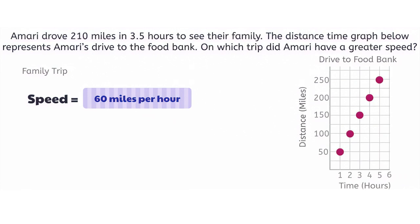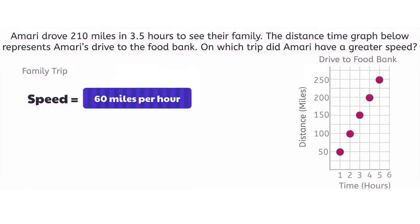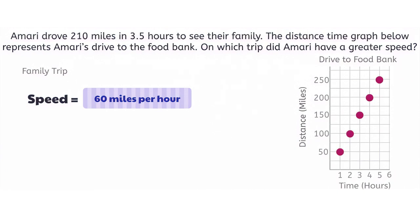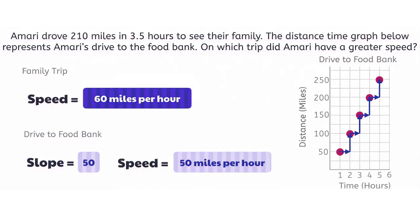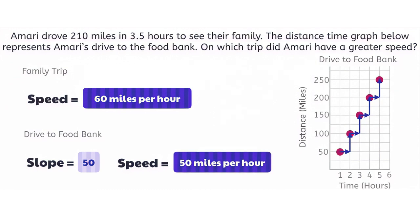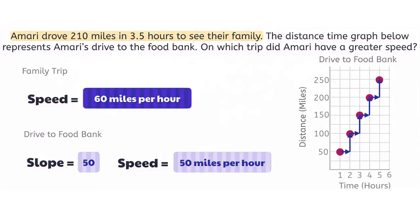Since we know Amari drove at an average speed of 60 miles per hour to see their family, we can determine how far they went after one hour when going to the food bank by looking at the graph. We can see that Amari drove 50 miles in one hour when they went to the food bank. Notice that the graph is a straight line, which means it is linear and has a constant slope. For each increase of one hour, Amari drives 50 additional miles, so the slope of the graph is 50. Since a speed of 60 miles per hour is greater than 50 miles per hour, Amari had a greater speed when they drove to visit their family.